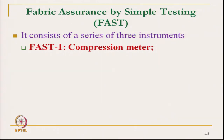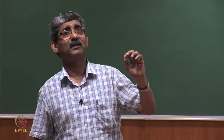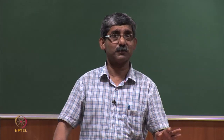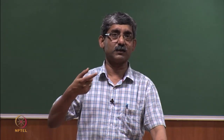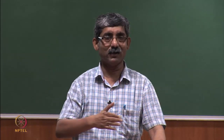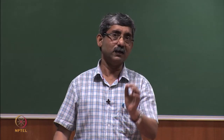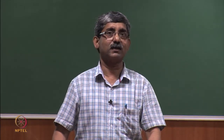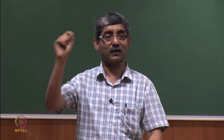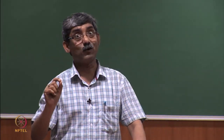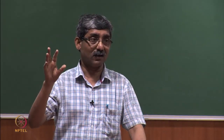The total FAST system consists of three test instruments. One is a compression meter, which is a simple compression tester. It is not like the KESF system. The KESF system gives a total curve — it is a very complex system that gives the full loading and unloading direction. But in the FAST system, it does not give any continuous measurement. In Kawabata, both loading and unloading direction give continuous data and a continuous curve. In the FAST system, we do not get any continuous curve — it is discrete data.